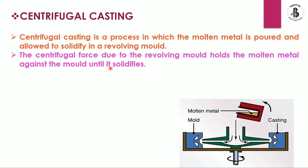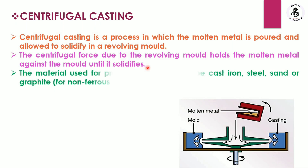Pouring of the molten metal as well as the total solidification process takes place within the mold cavity. The materials used for making the molds may be cast iron, steels, sands, or graphite, basically for non-ferrous kind of castings.